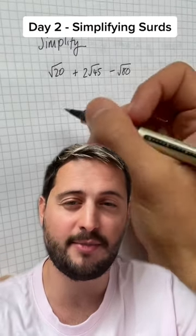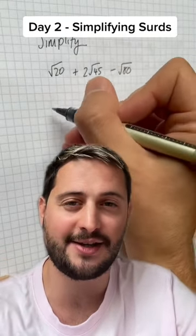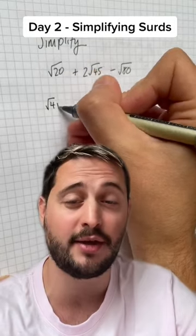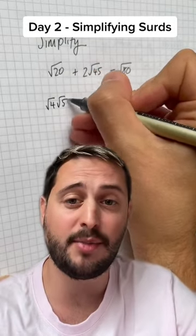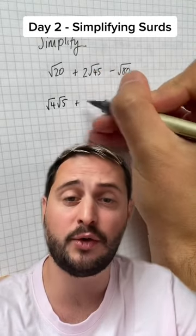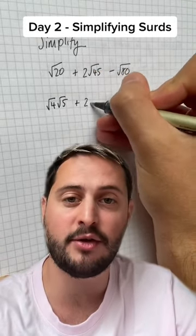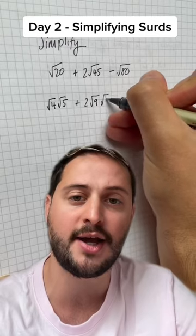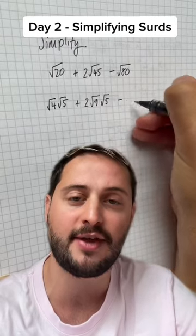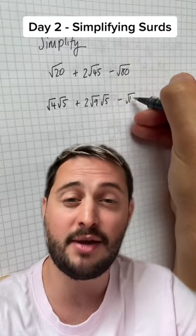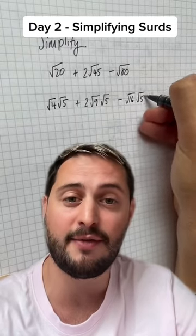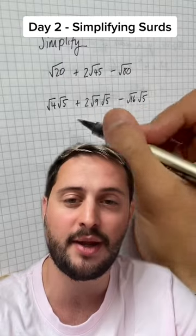This one's all about spotting what factors these numbers have that are square numbers. So 20 can be rewritten as 4 times 5, and 45 can be rewritten as 9 times 5. 80 can be rewritten as 16 times 5, so I've split them all up in this way.